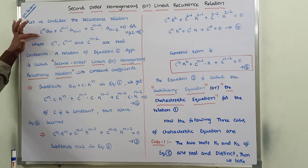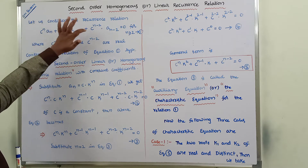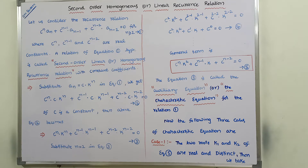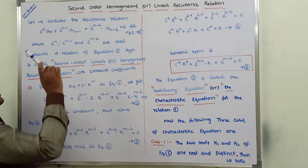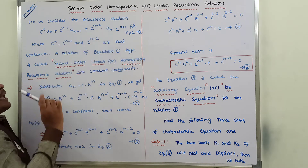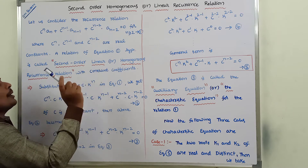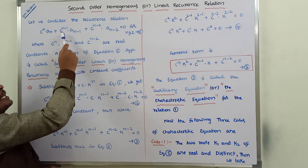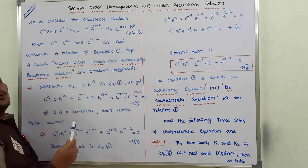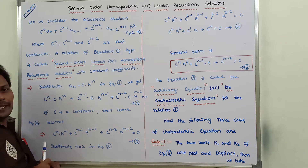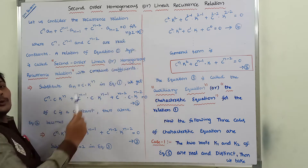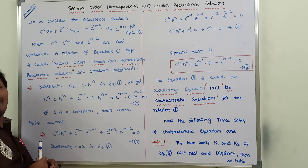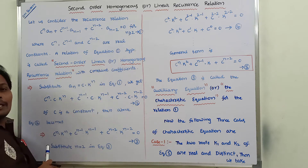Here c_n, c_(n-1), and c_(n-2) are called real constants. This is a linear homogeneous recurrence relation with constant coefficients, where c_n, c_(n-1), and c_(n-2) are the constant coefficients. Here n is greater than or equal to 2 because it is a second order relation.